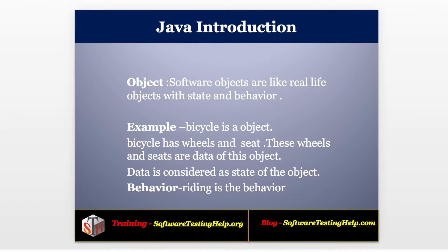Okay, what is object? Objects are like real life objects with state and behavior. In our real life we have many objects. Consider bicycle as an object. Here bicycle has wheels and seat. These wheels and seats are data of the object, and this data is considered as a state of the object in programming.